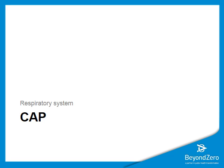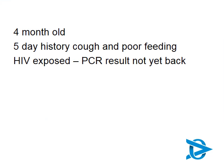By far one of the most important opportunistic infections in children with HIV is community-acquired pneumonia. A typical presentation: a four-month-old comes in with a five-day history of cough and poor feeding. Mom has noted he's breathing with difficulty and won't take any fluids. No diarrhea or vomiting. History reveals the child is HIV-exposed; mom had some PMTCT during pregnancy but adherence is unclear. The baby had nevirapine for six weeks, then a PCR was taken at 10 weeks, but the child never returned for the result.